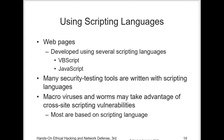Web pages can be developed with several scripting languages, such as VBScript and JScript or JavaScript. You should be able to recognize when one is being used, because many security testing tools are written with scripting languages. Also, most macro viruses and worms take advantage of cross-site scripting vulnerabilities, which we'll discuss later in this chapter. It's good to have an understanding of the vulnerabilities that cross-site scripting creates, but scripting languages are needed to make web pages dynamic.